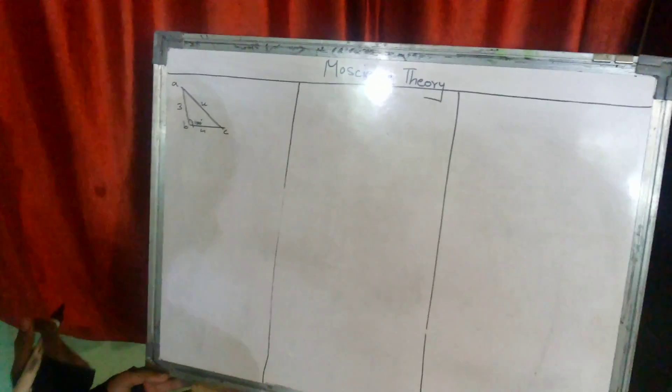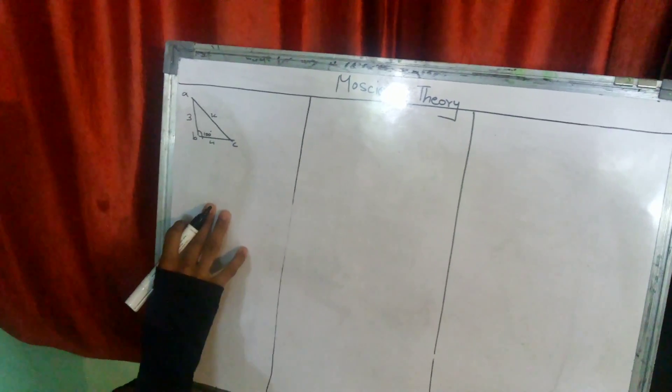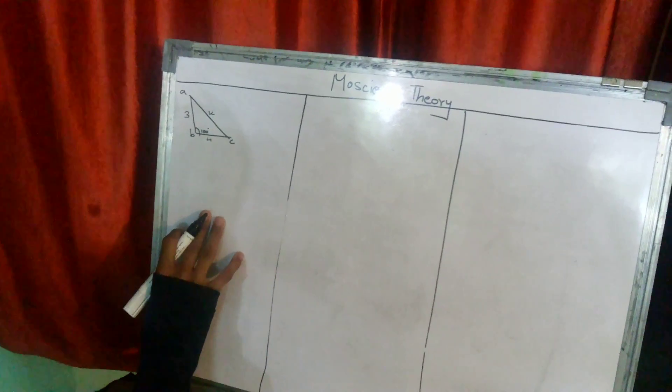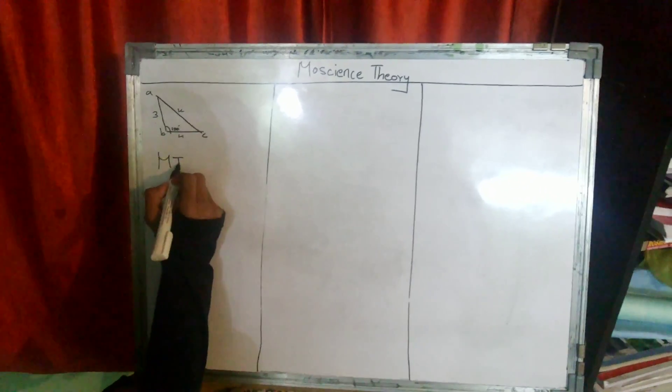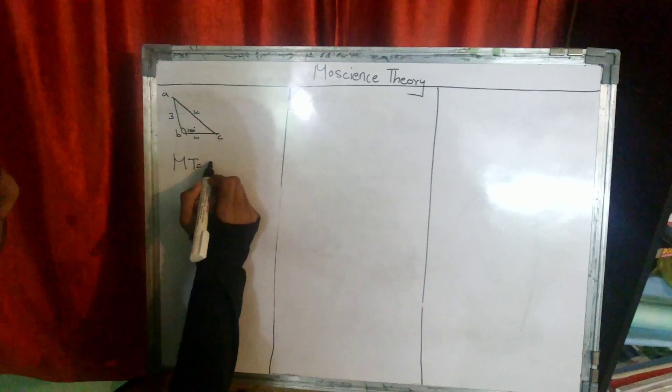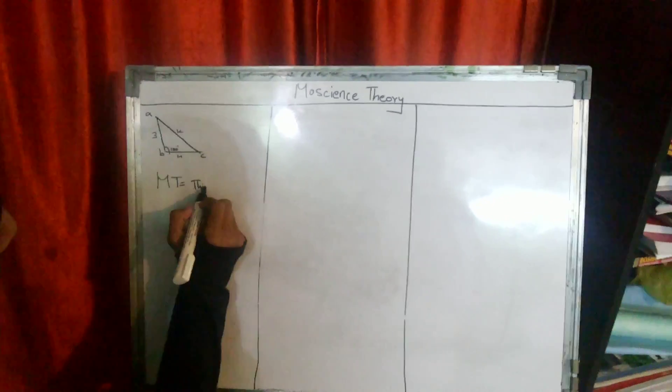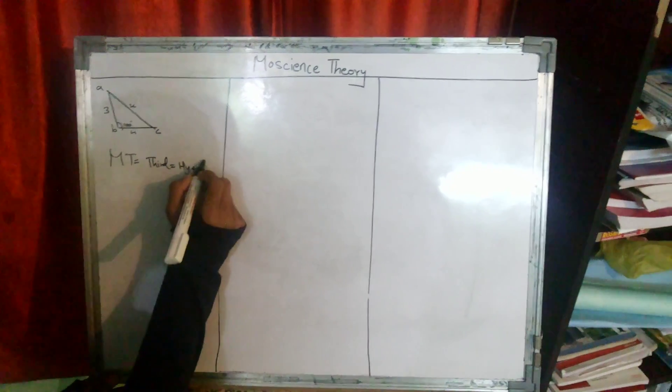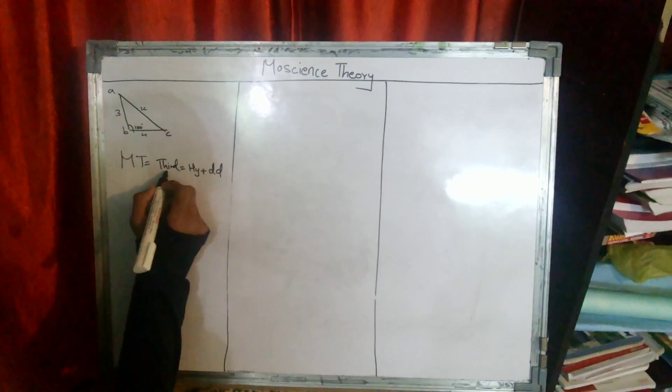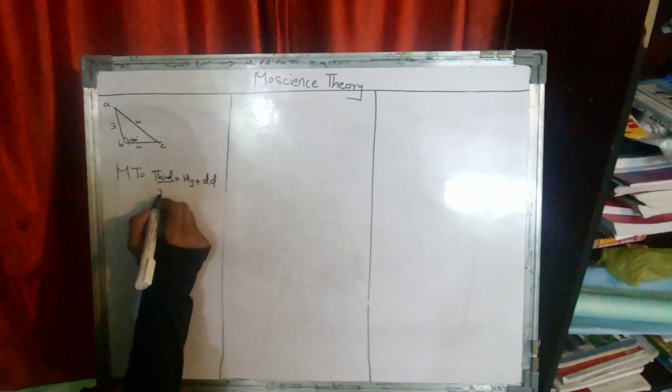For a 100 degree triangle, third side find. Pythagorean theorem is not used, but by Mohs science theorem there is a formula. Third side is equal to hypotenuse plus degree distance. So third side is not given, third side is X.